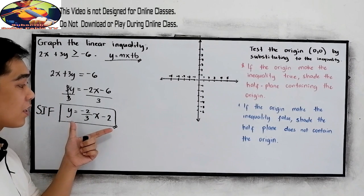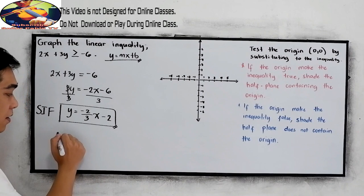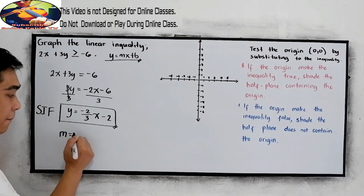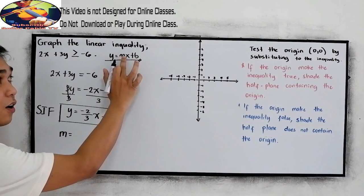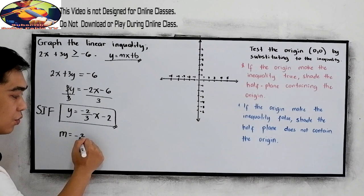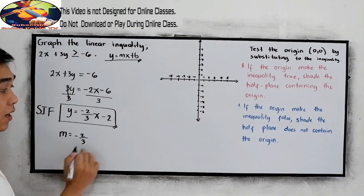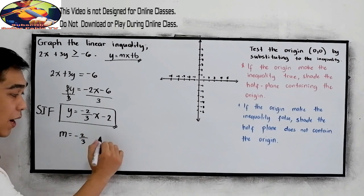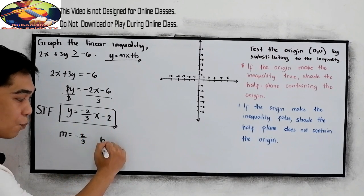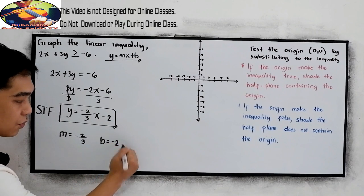So this is now our slope-intercept form. In our slope-intercept form, we can find our m, which is the slope: negative 2 over 3. And our y-intercept, which is b: negative 2.